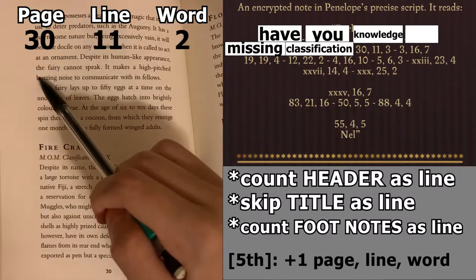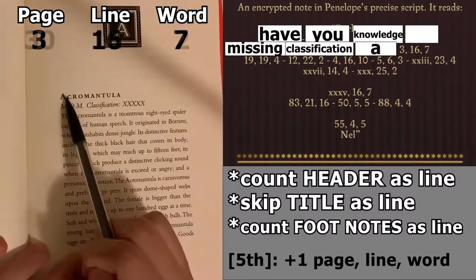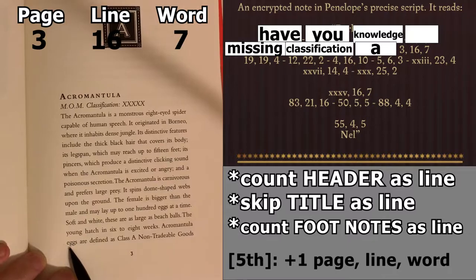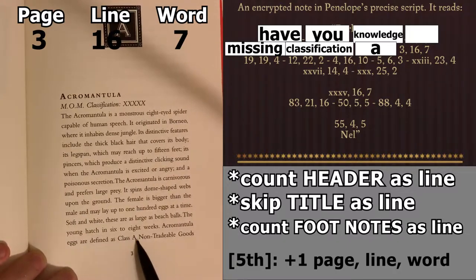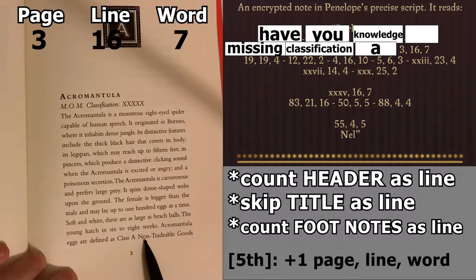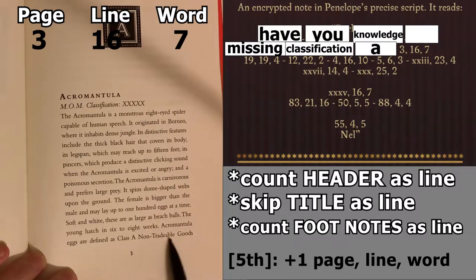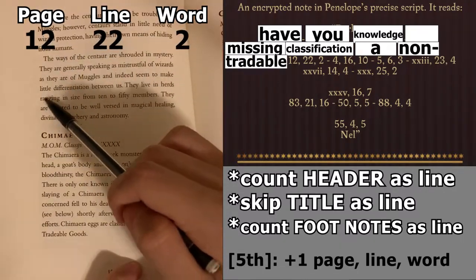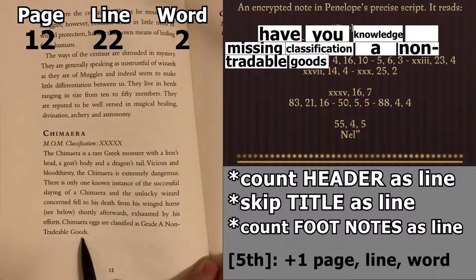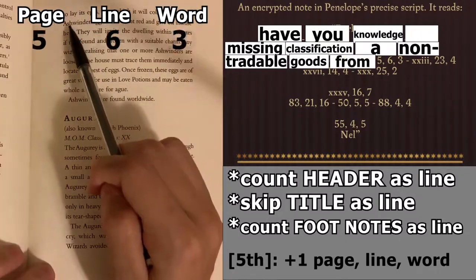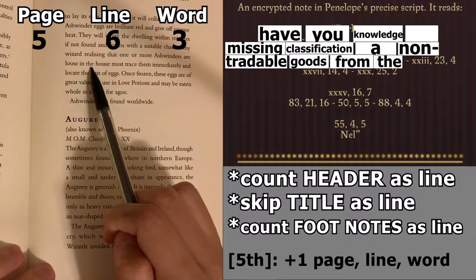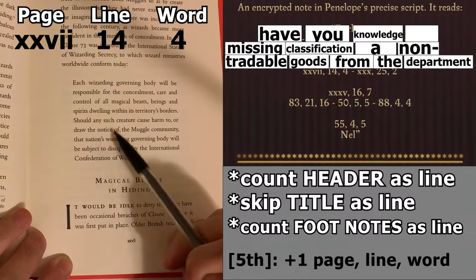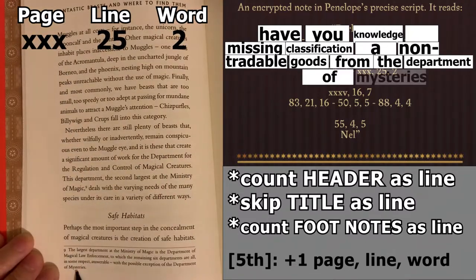Missing Classification A. So here, we want to make sure that hyphens are two separate words. So we're going to go with non-tradable goods from the department of mysteries.